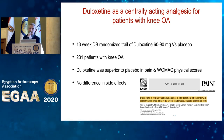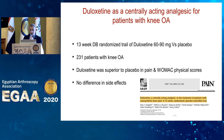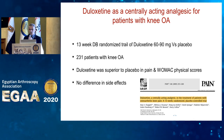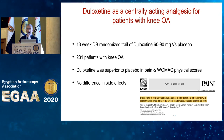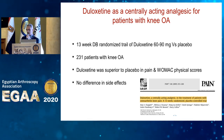As a centrally acting analgesic, duloxetine has been tried for patients with knee osteoarthritis. This 13-week double-blind randomized trial of duloxetine 60 to 90 mg versus placebo included over 200 patients with knee osteoarthritis. Duloxetine was superior to placebo in pain reduction as well as the physical component score of the WOMAC score, with no difference in side effects. It has been proven that duloxetine plays a role in controlling pain for patients with knee osteoarthritis.